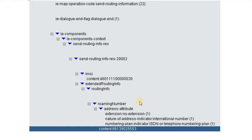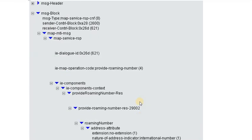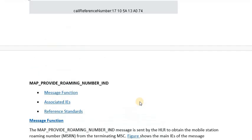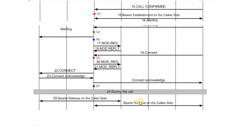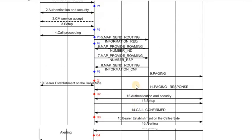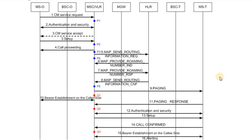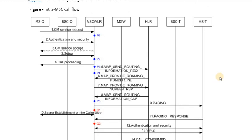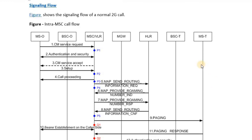Once the originating MSC receives the MSRN from the HLR, it proceeds with subsequent operations for the call connection. Returning to the original call flow, the next process after these MAP messages is paging, which we will cover in the next lecture. I hope this lecture has been of interest and provided useful knowledge. Stay tuned for upcoming lectures — thank you so much.